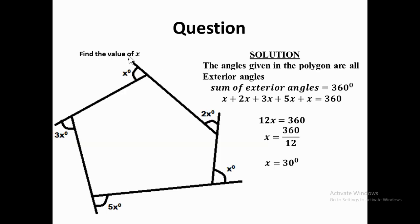Now let's look at another question. We are given a diagram of a polygon with angles labeled. We need to determine whether these are interior or exterior angles. These are exterior angles because the angles are outside the polygon. The question asks us to find the value of x. From our previous video, we said that the sum of exterior angles of any polygon is 360 degrees. So the sum of all exterior angles equals 360 degrees.